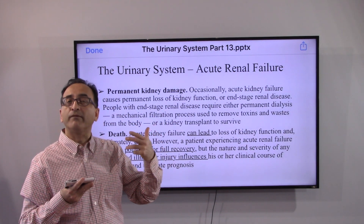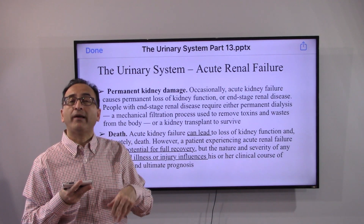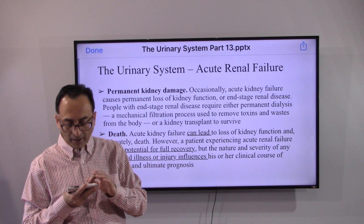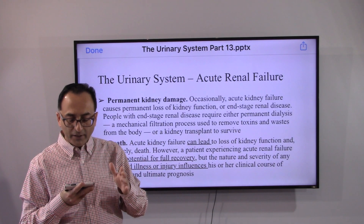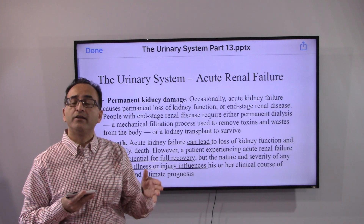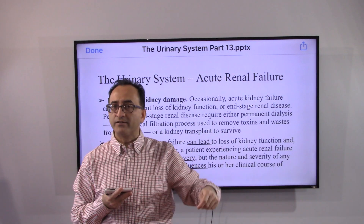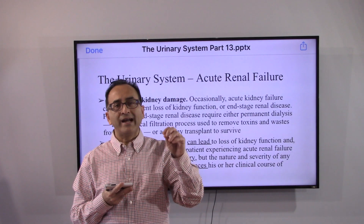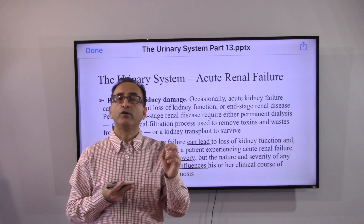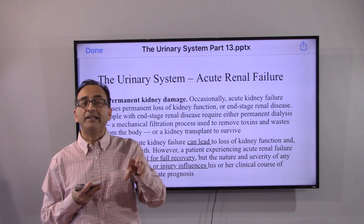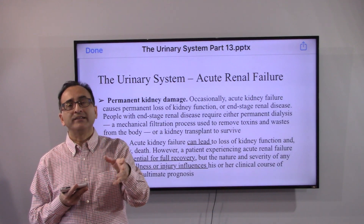In acute renal failure, there are cases where you may fully recover after a few months depending on why it happened. However, there may also be cases where it leads to permanent kidney damage. If it progresses to end-stage renal disease, then dialysis is needed — a machine performs filtration instead of the kidney — and a kidney transplant may be recommended if a matching donor is found.